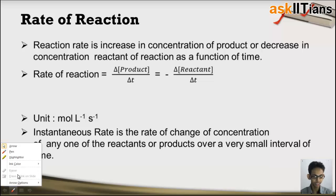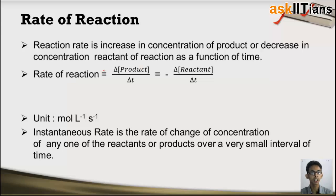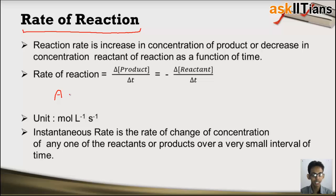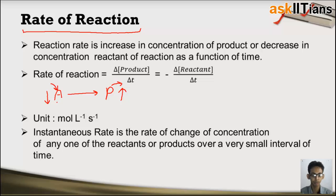As the name suggests, rate of reaction deals with the speed of a chemical reaction — that means how fast or how slow a chemical reaction is taking place. It gives us a quantitative idea about the speed of a chemical reaction. During a chemical reaction, reactants get converted into products, meaning the concentration of reactants decreases while that of products increases as the reaction proceeds. So rate of reaction can be expressed as the decrease in concentration of reactant or increase in concentration of product with time.